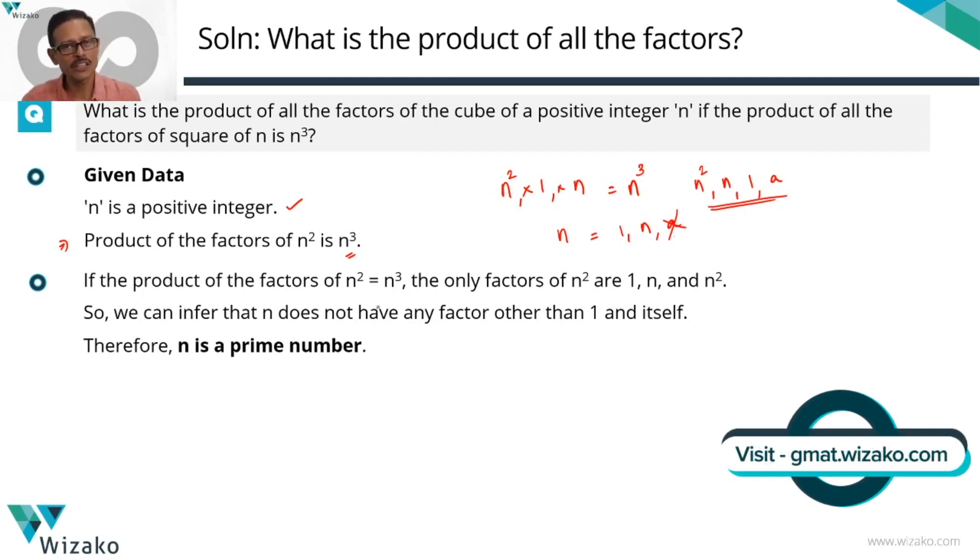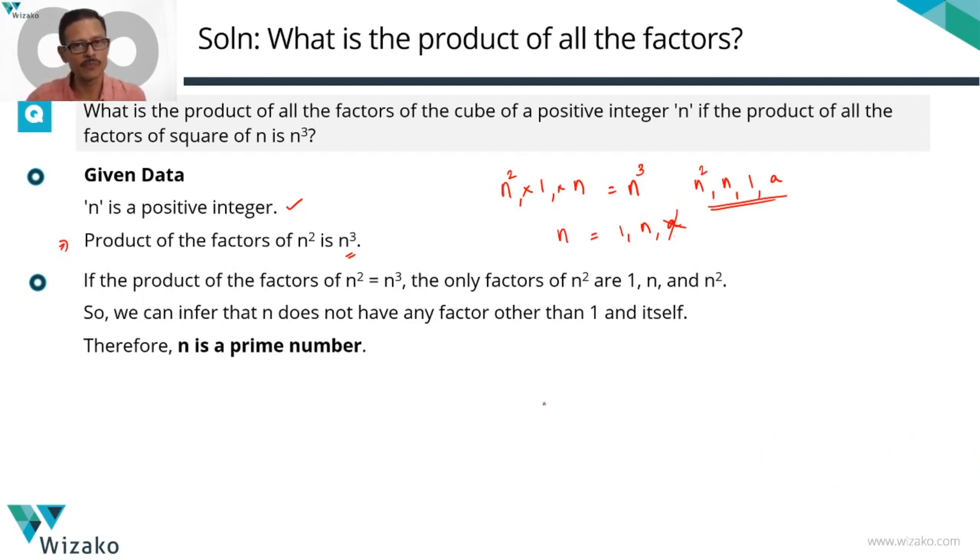So if the product of all the factors of n square is n cube, we know that the only factors that n square can have are 1, n and n square. The only factors of n square are 1, n, n square. We can infer that n is a prime number.